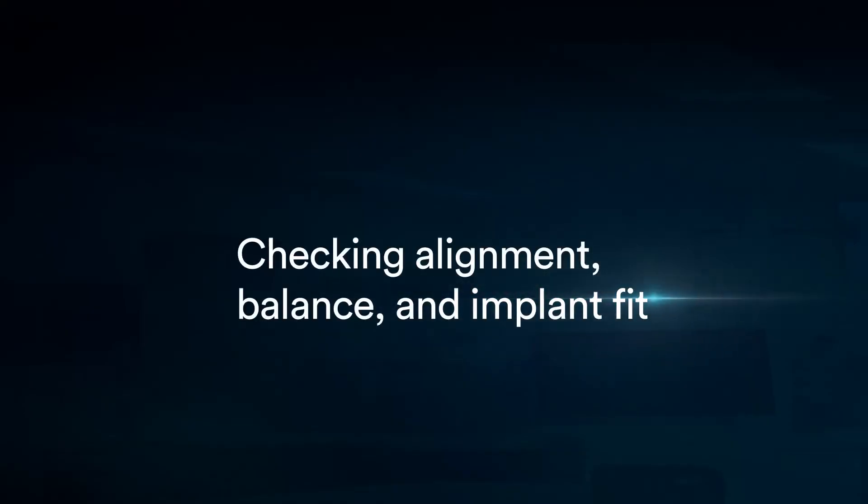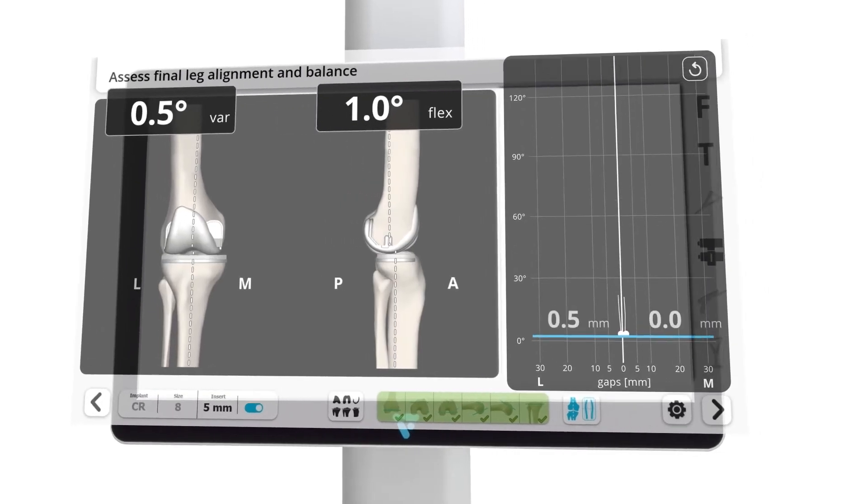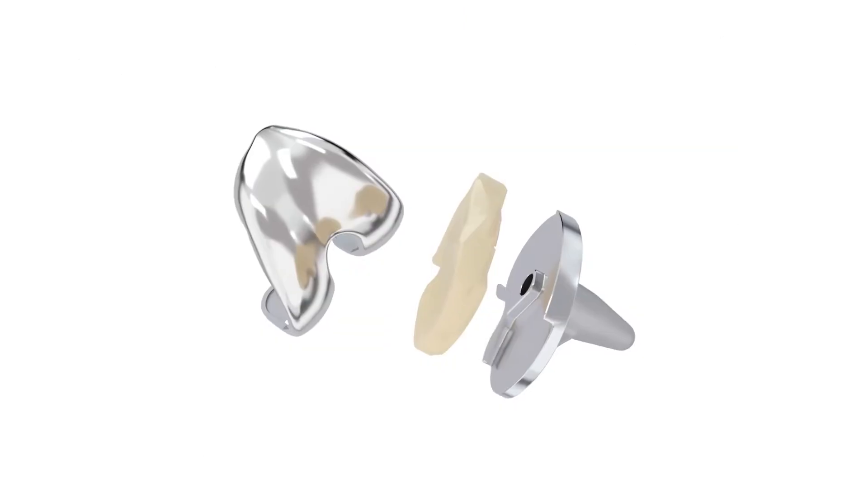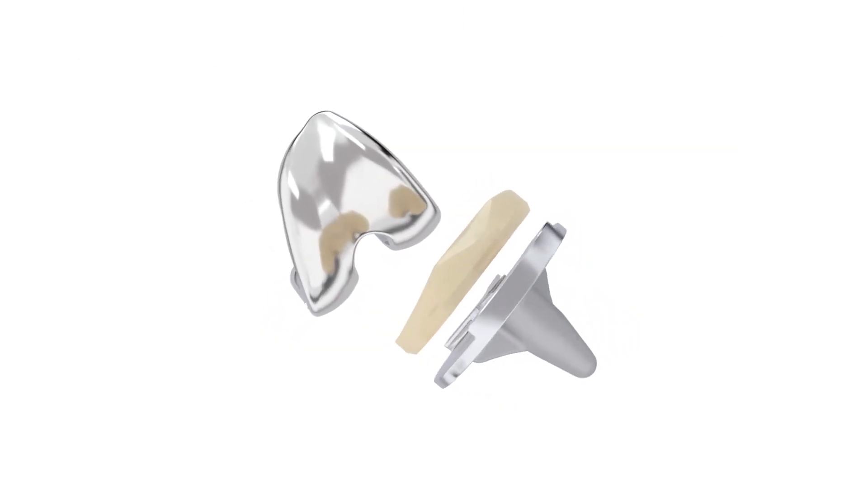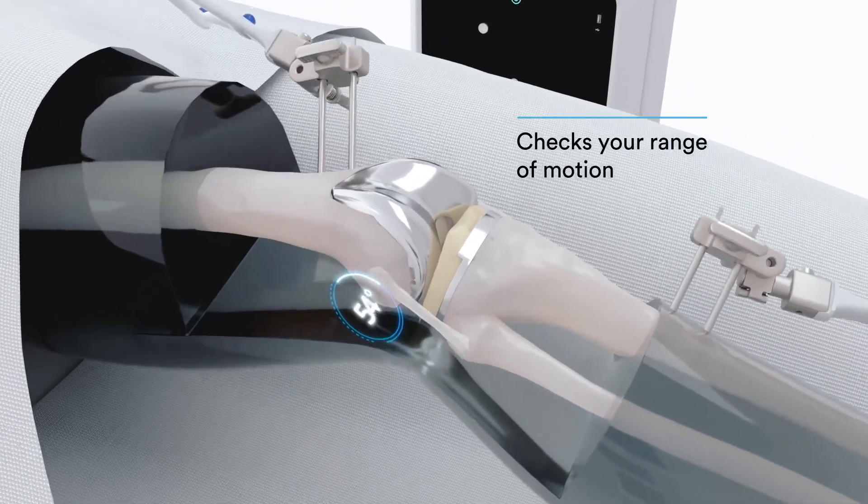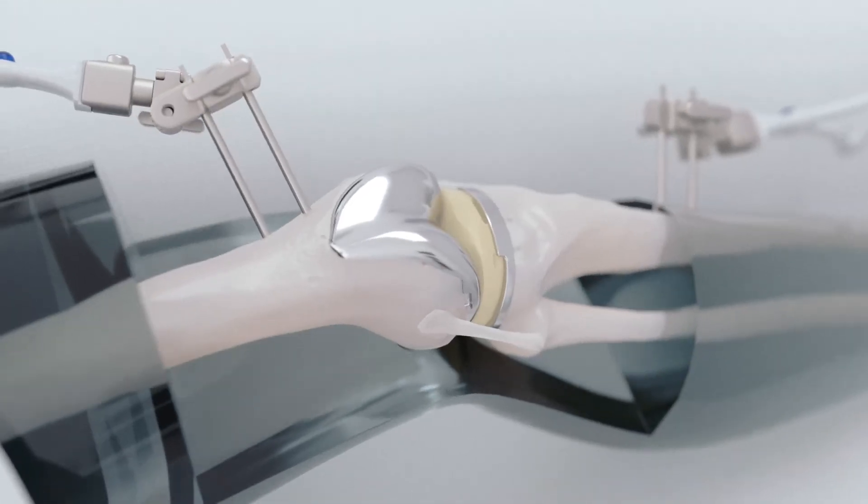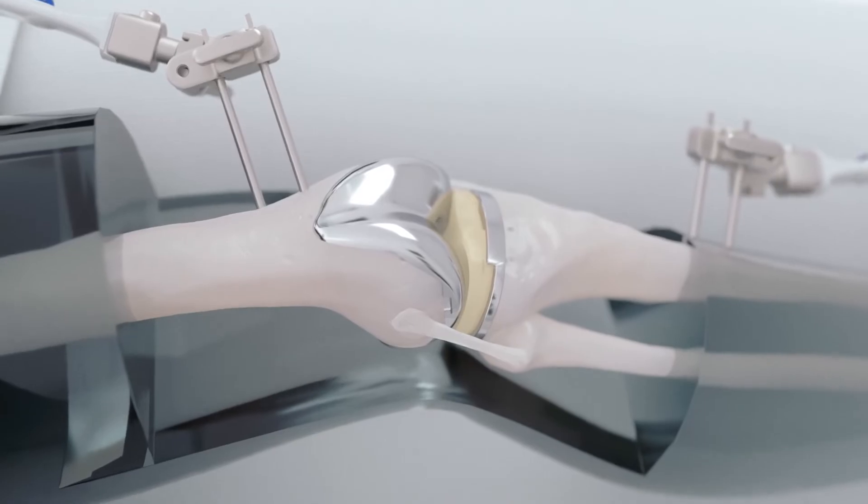The technology software is used to verify your final alignment and balance. The implant components are placed and your surgeon will check the range of motion. Then your surgeon will remove the trackers and close the incision site.